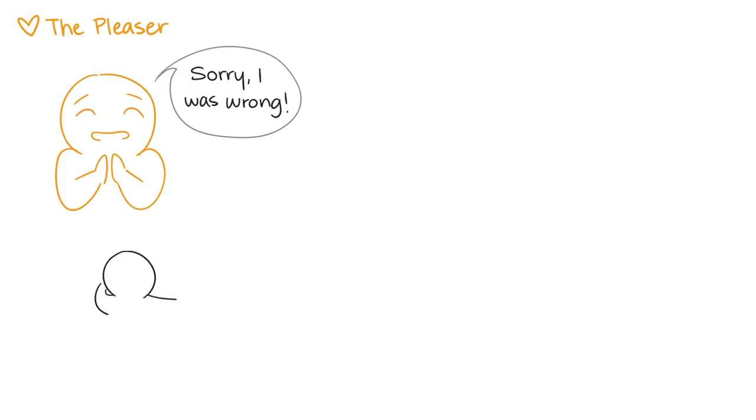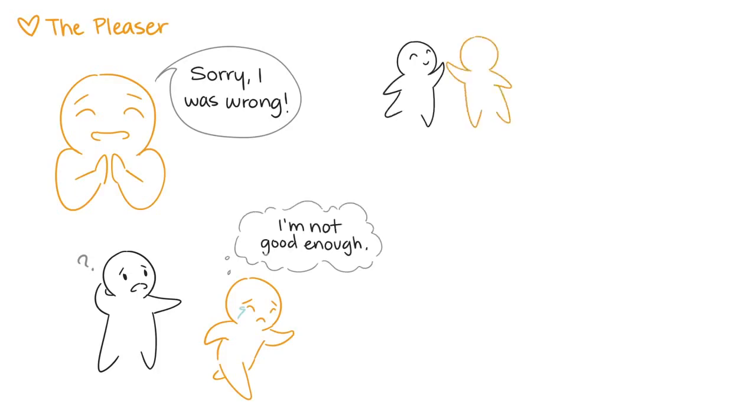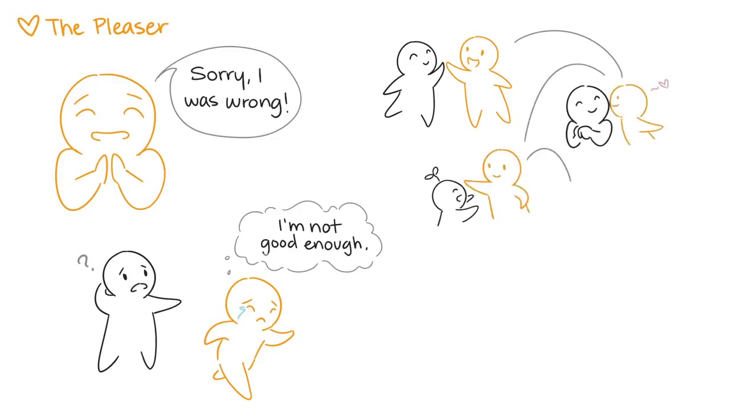However, when pleasers feel stressed or believe that they are continuously letting someone down, they can have a breakdown and flee from relationships. Pleasers often spread themselves thin trying to be everything to everyone when it's not realistic, and instead of forming healthy boundaries for themselves, they focus more on the needs and desires of others.